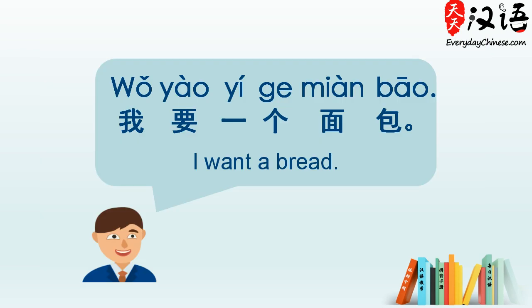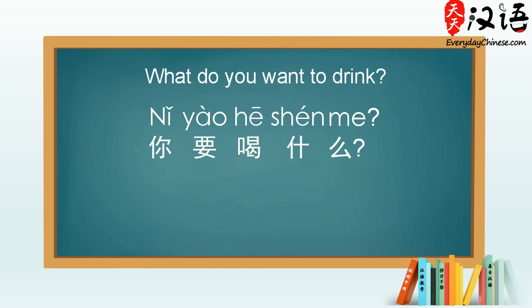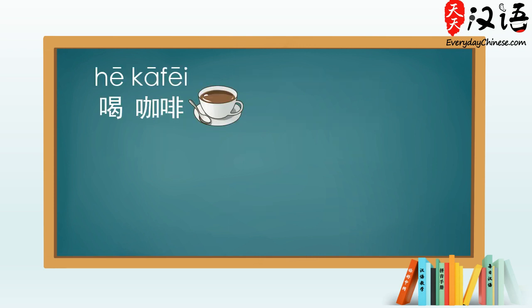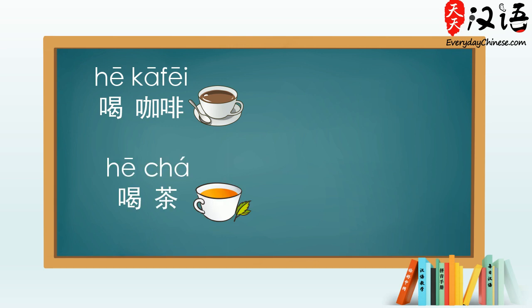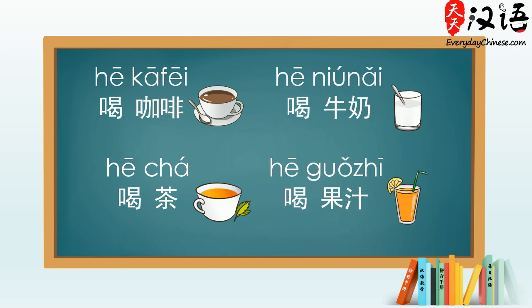If you are invited to a Chinese friend's home, your friend will ask you, what do you want to drink? 你要喝什么? Here, 喝 means to drink. To drink coffee: 喝咖啡. To drink tea: 喝茶. To drink milk: 喝牛奶. To drink juice: 喝果汁.